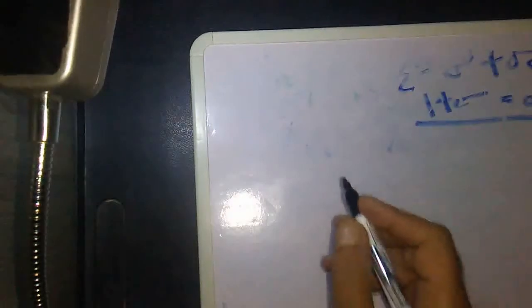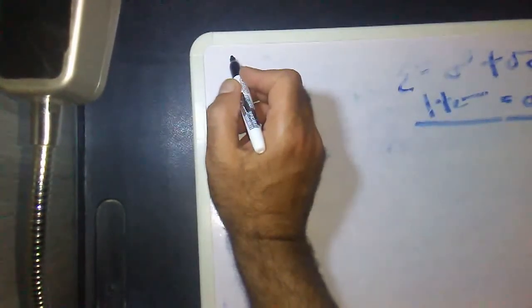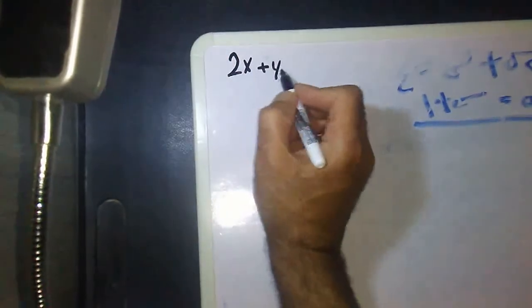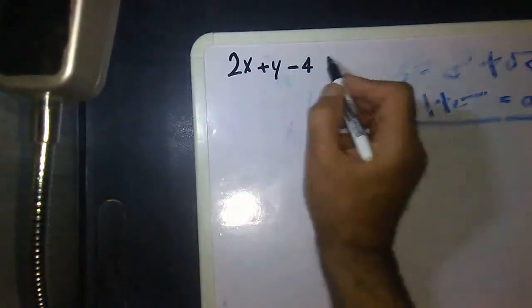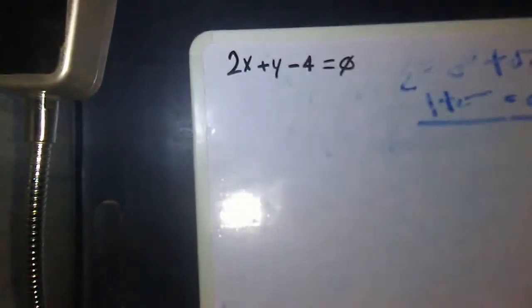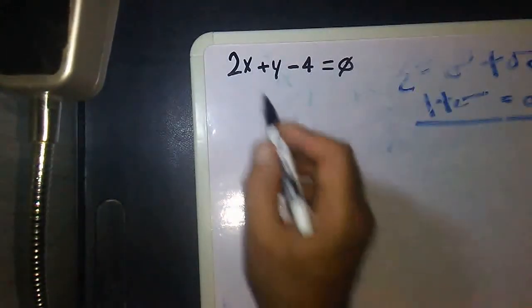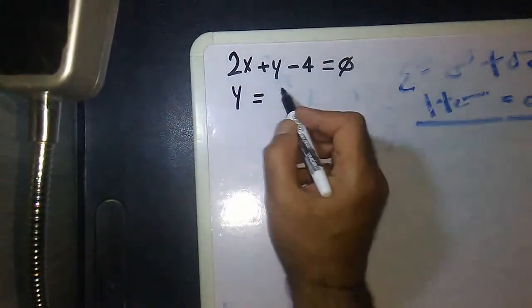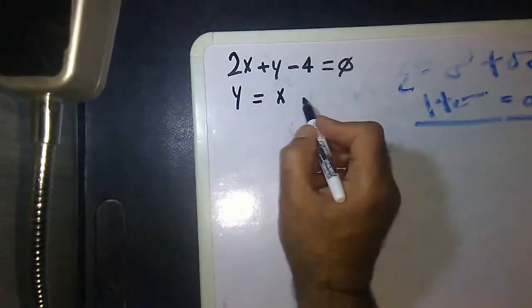Hello my dear students, how are you? Today we are going to talk about a new example and how we will solve the problem of two variables. We have two equations and two variables. The first equation is 2x plus y minus 4 equals 0. The second one is y equals x plus 1.